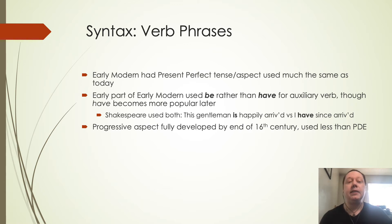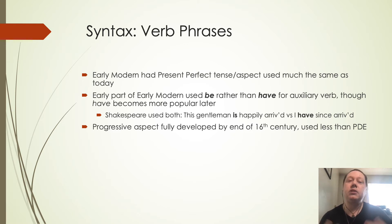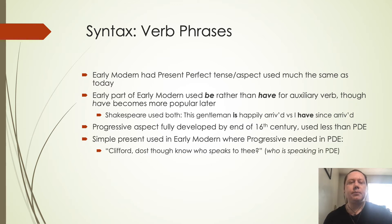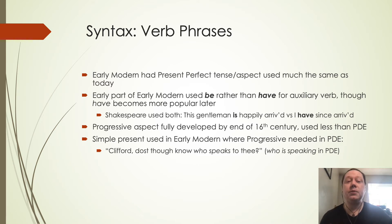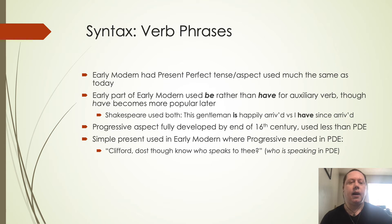The progressive aspect, our -ing ending, is fully developed by the end of the 16th century, but we still don't see it used nearly as often as in present-day English. During this time it would have been established and possible, but not used quite as widely. We also see the simple present used in Early Modern where the progressive is needed now. So 'Clifford, dost thou know who speaks to thee' — we would have to say 'who is speaking to thee' in present-day English.